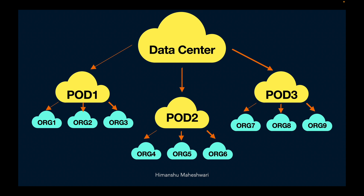Each pod can host multiple orgs, and those orgs have their own org ID. So relating to the building analogy: the builder makes buildings in a specific region — those are the pods. Each building has different customers — org 1, org 2, org 3 — and each tenant is identified by their flat number, which is the org ID. That's how Salesforce manages all the customers' versions of Salesforce through these data centers.